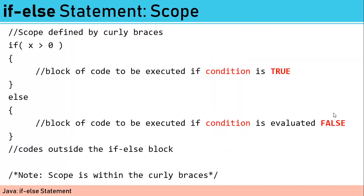And how do we determine the scope? We have two methods actually. The first one is by using the curly braces. I would prefer this method, so you could easily determine the scope for the if and for the else block. And outside that are the codes outside the if-else block.